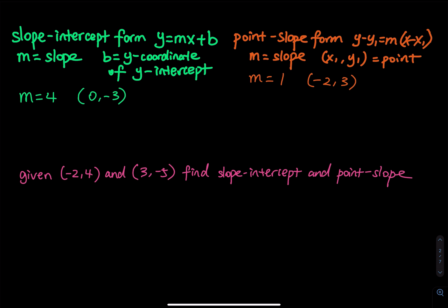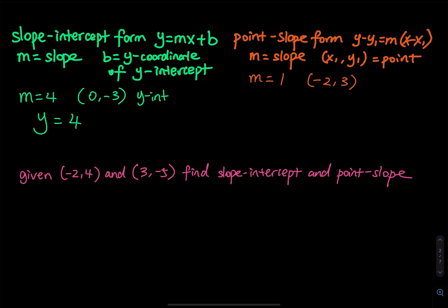Here's an example. When m is equal to 4 and the point is clearly a y-intercept — when x is equal to 0, y is equal to negative 3 — we write the slope-intercept form. So we have y equals mx, which is 4x, plus b, so plus negative 3, which gives y equals 4x minus 3.